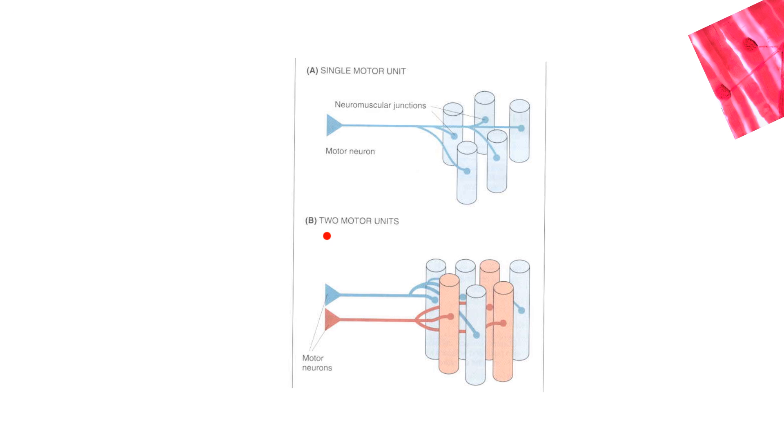Then down in the lower part, we have two motor units. And they're color coded. This motor unit is talking to three muscle fibers, whereas this top one has got four, one, two, three, four. Okay, so that's the concept of a motor unit. The axon talks to how many muscle cells.